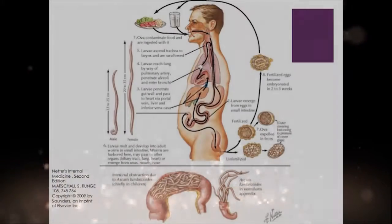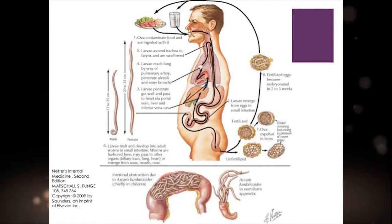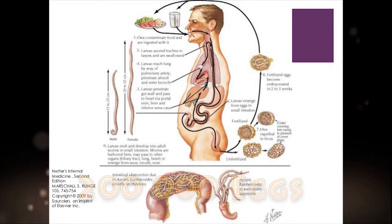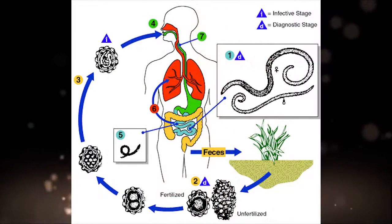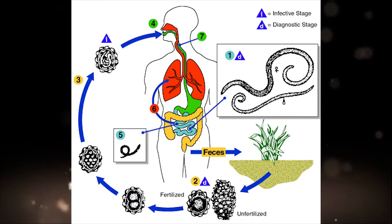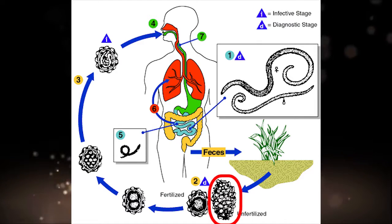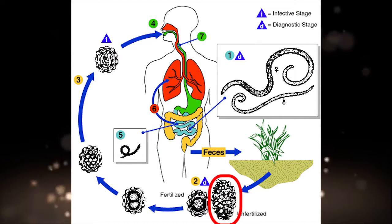Adults live in the lumen of the small intestine. The female may produce approximately 200,000 eggs per day, which are passed with the feces. Unfertilized eggs may be ingested but are not infective.